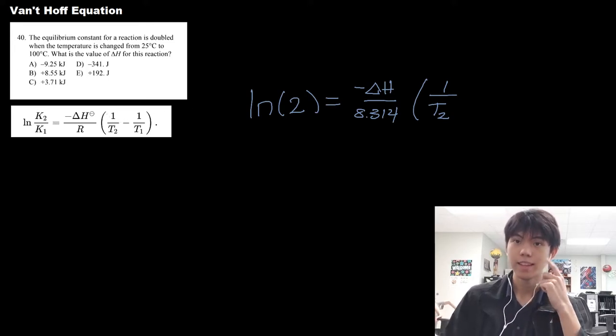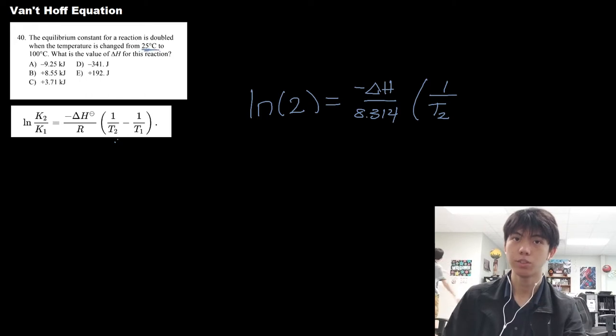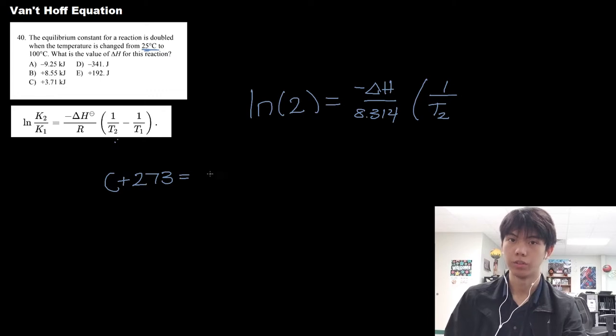Make sure you get this also. Instead of using the Celsius written in the problem, you need to convert it to Kelvin, which is simply Celsius plus 273, which equals your Kelvin. So you subtract these two temperatures together, and you should be given your delta H or enthalpy.